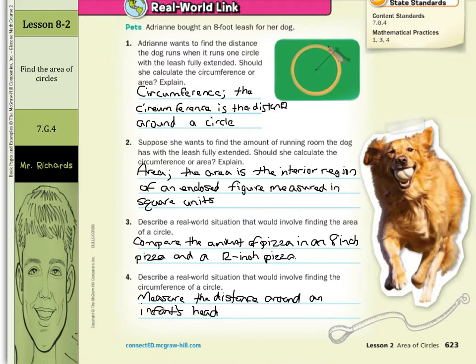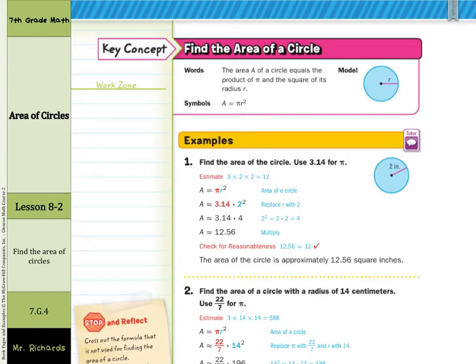Let's continue on to our examples of how to find area of circles and semicircles. Our first key concept today is find the area of a circle. The area A of a circle equals the product of pi, that 3.14 or 22 sevenths, and the square of its radius r. We just have one formula for area here: A equals pi r squared.